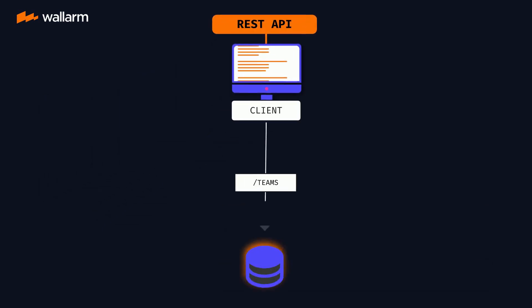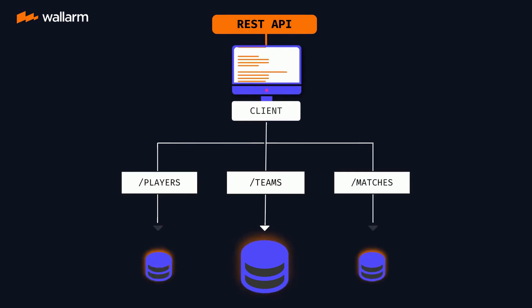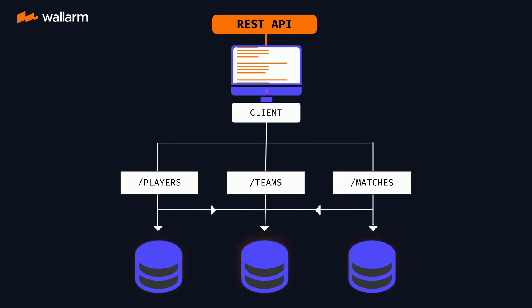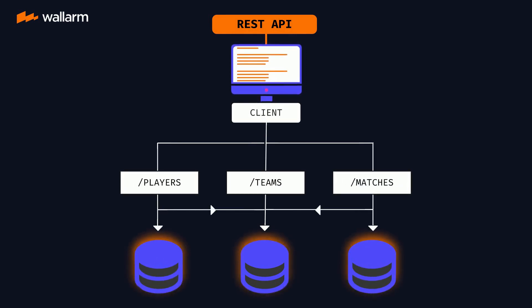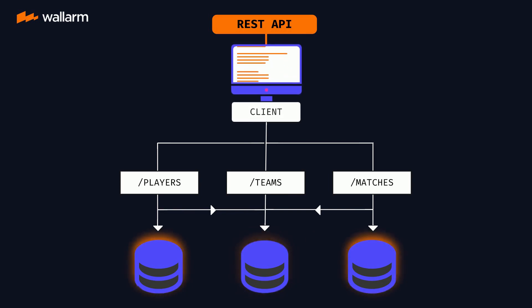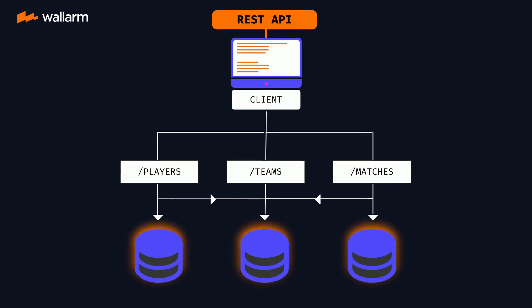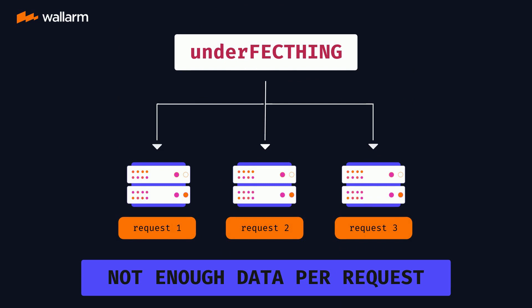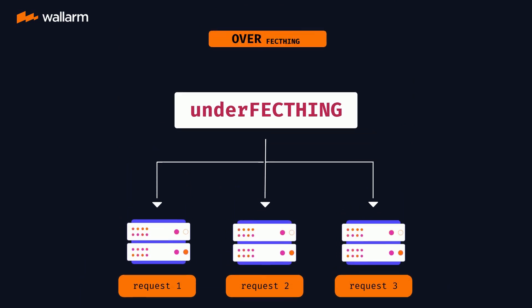Traditionally, web developers have consumed APIs using REST, with data entities living at a bunch of URLs on a server. When a request is received, the API responds with the full data payload of that entity. That sounds simple enough, but there are two potential drawbacks. We may need multiple entities at one time, in which case each request is under-fetching the actual data we want.